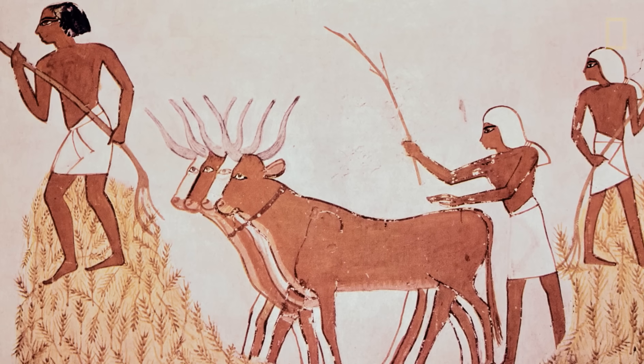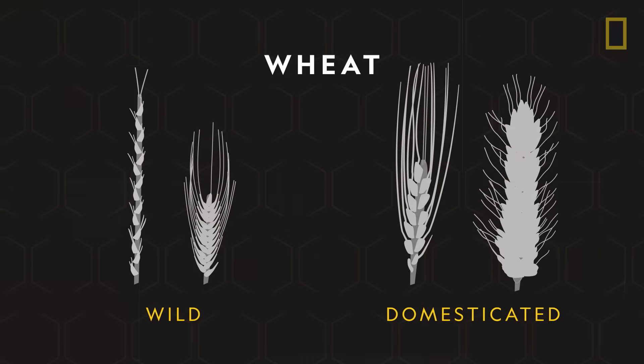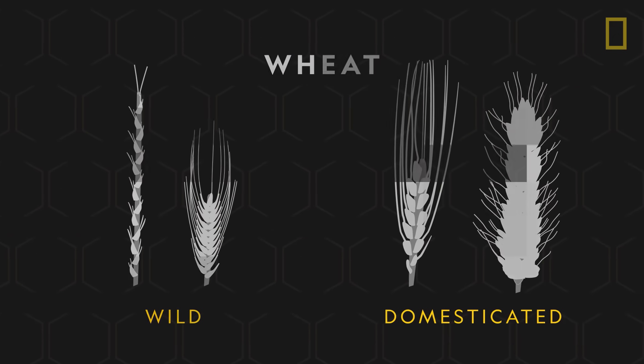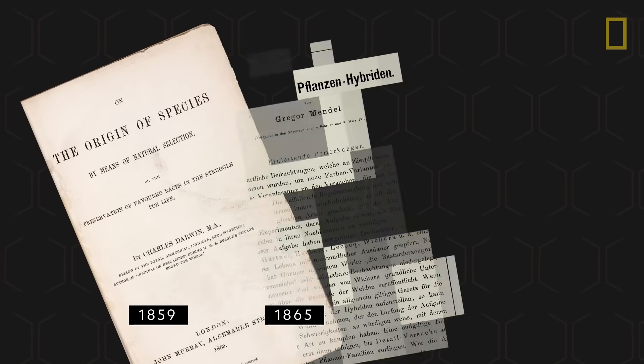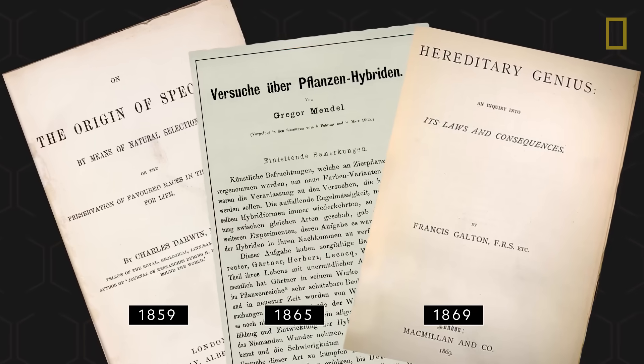For thousands of years, humans have observed this inheritance of traits and implemented their knowledge to breed and domesticate plants and animals. However, the science behind inheritance was only starting to be understood in the mid-19th century.